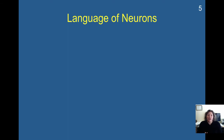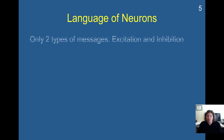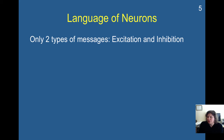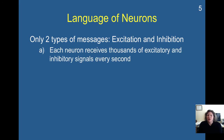Neurons have a certain way that they communicate, and you're going to be learning about this in this course. There are only two types of messages that neurons send each other. A neuron on its own is actually pretty stupid — neurons can only function in groups. They can send two types of messages: an excitation message or an inhibition message. Each neuron receives thousands of excitatory and inhibitory signals every second.